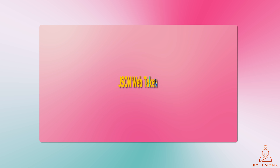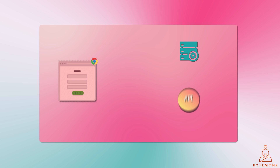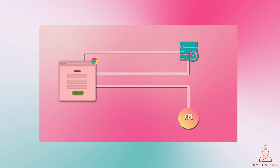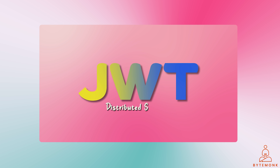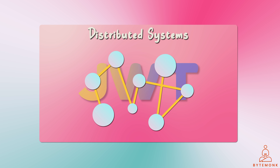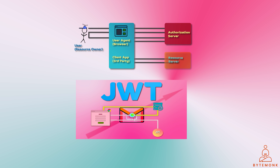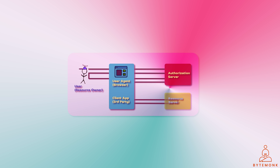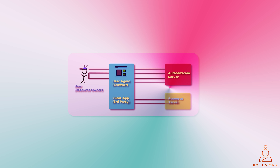I have covered JWT in detail in a previous video, where I explained how they are a great way to authorize users and perform role checks in front-end to back-end communication and in distributed microservices architecture. OAuth 2.0 and JWT are two different protocols, but they can work together to provide a secure and efficient way for third-party applications to access protected resources. In the context of OAuth 2.0, JWTs can be used to represent access tokens, because JWTs are self-contained and can be easily verified by the resource server.